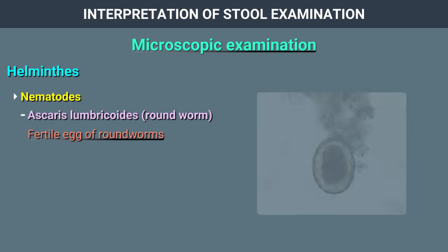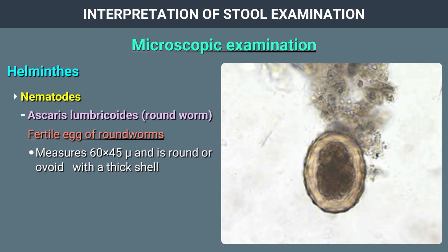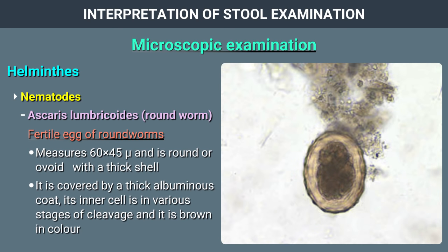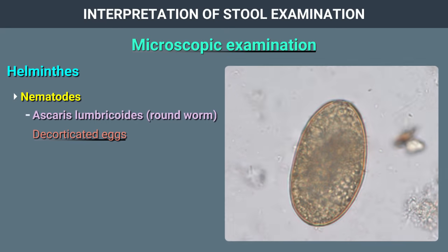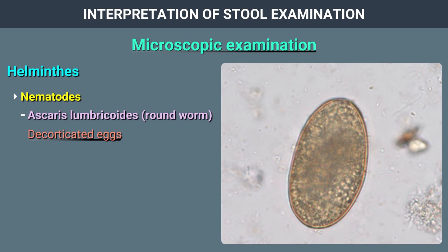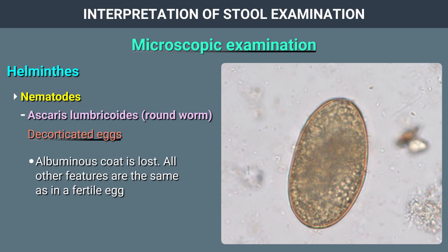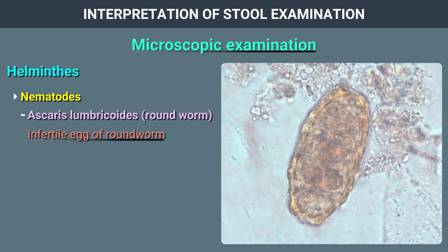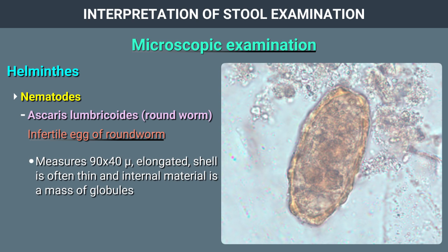Ascaris lumbricoides (roundworm): the fertile egg measures 60 by 45 microns. It is round or ovoid with a thick shell covered by a thick albuminous coat. Its inner cell is in various stages of cleavage and is brown in colour. Decorticated eggs have the albuminous coat lost. The infertile egg measures 90 by 40 microns; it is elongated, its shell is often thin, and its internal material is a mass of globules.